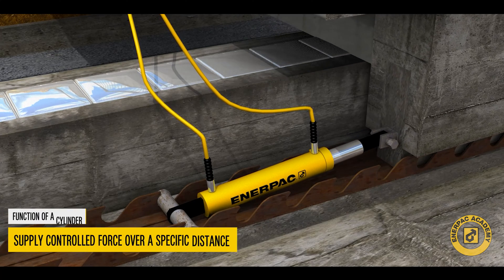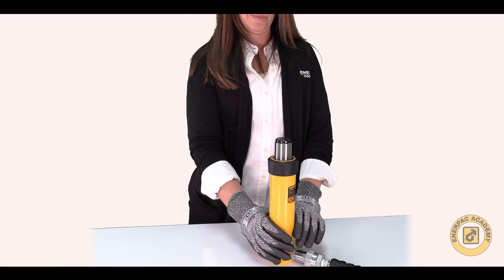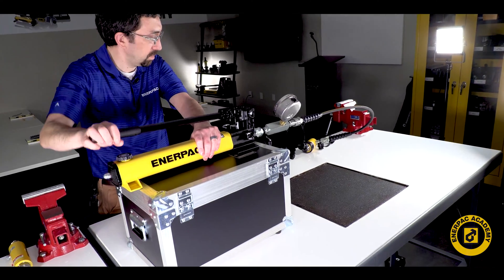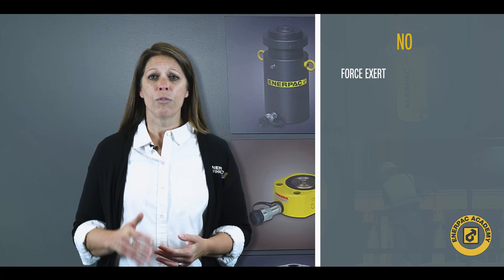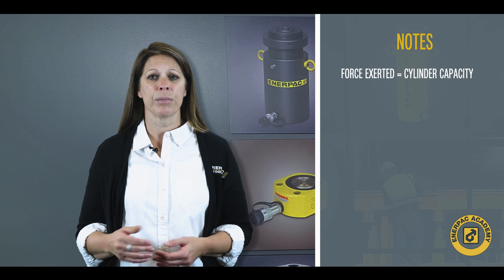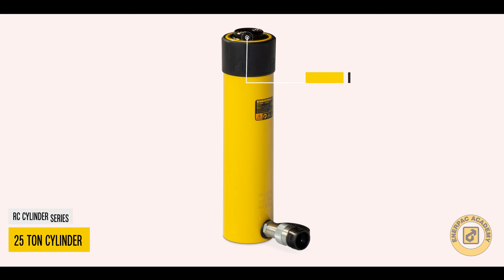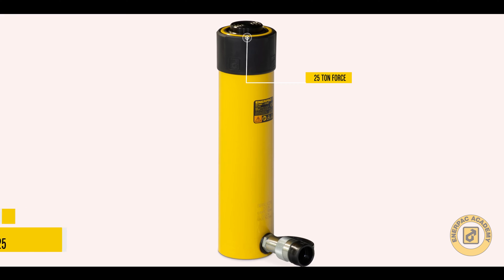The main function of a hydraulic cylinder is to supply a controlled force over a specific distance. The cylinder force and stroke are provided by its hydraulic plunger. As hydraulic fluid is applied to the cylinder, it is the plunger that extends and exerts the force when resistance is met. The force a cylinder can exert is typically referred to as its capacity. A 25 ton or 232 kilo Newton cylinder exerts a force of 25 tons or 232 kilo Newton at its rated hydraulic pressure.